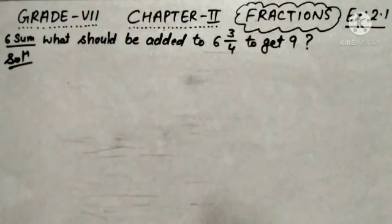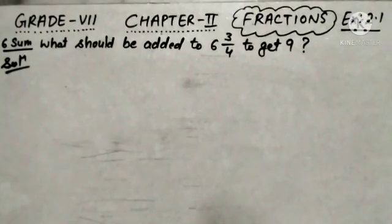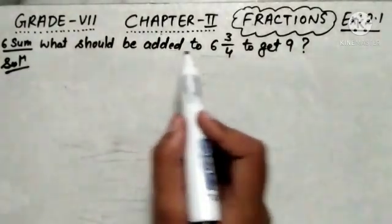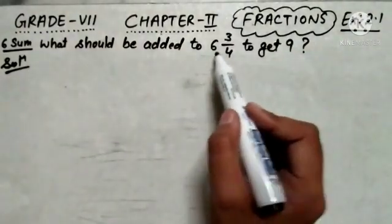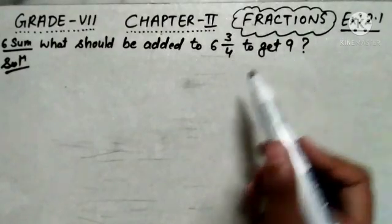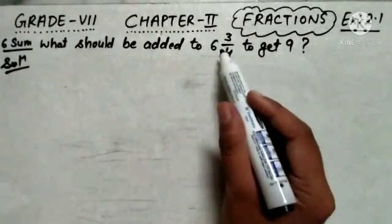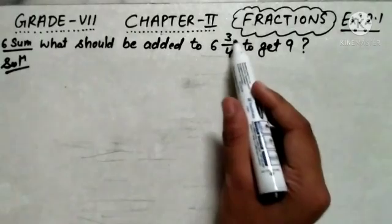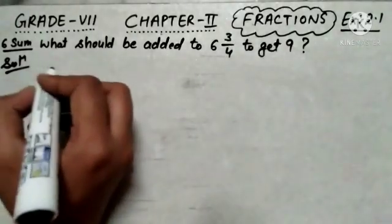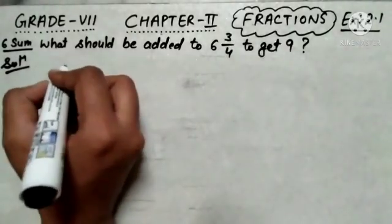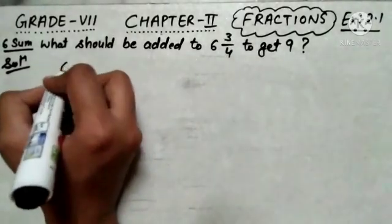Greetings everyone. In this video we are going to do sum number 6 of exercise 2.1. The statement of the 6th sum is: what should be added to 6 and 3 by 4 to get 9? That means what we will add into 6 and 3 by 4 to get 9. So let us suppose that we will add x.